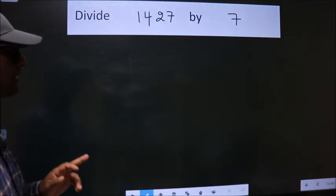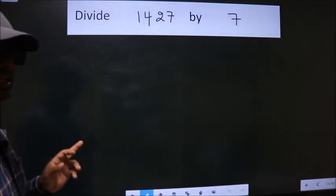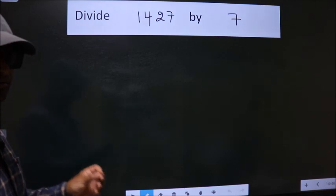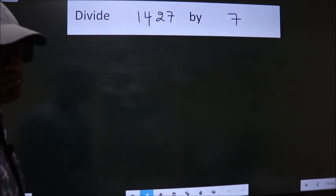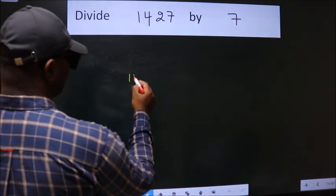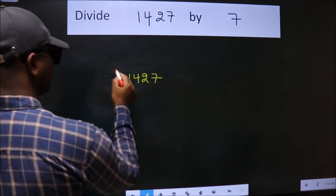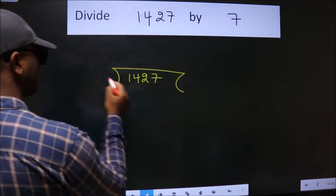Divide 1427 by 7. To do this division, we should frame it in this way. 1427 here, 7 here.